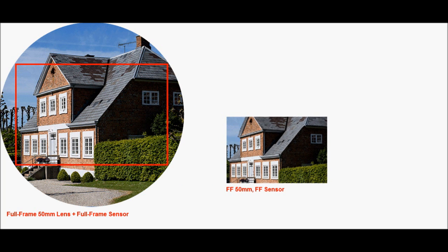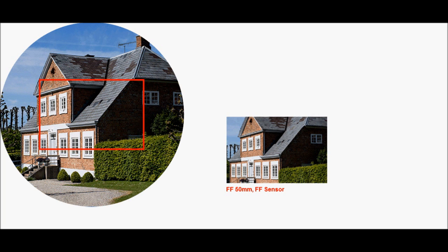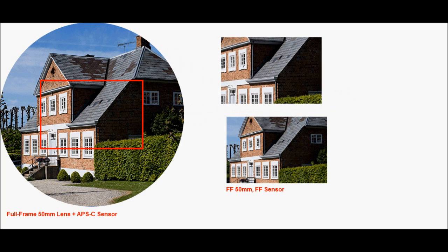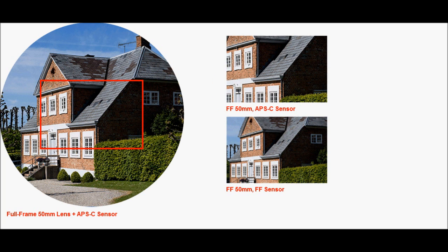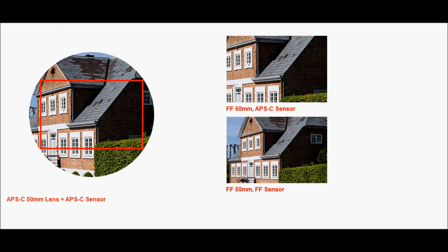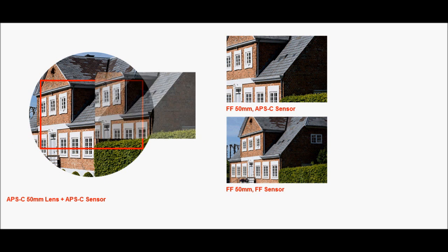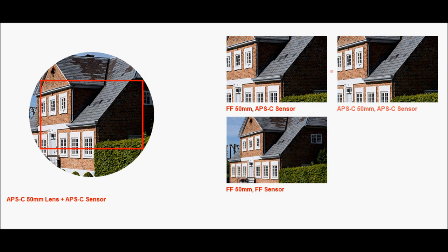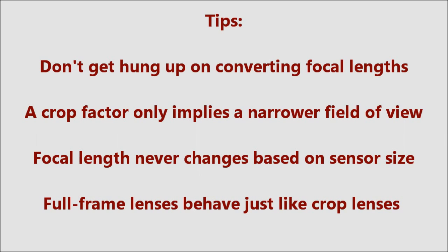So what's the bottom line? The one and only implication of the crop factor is the reduced field of view. It does not magnify the image or give you more zoom, and it doesn't modify the behavior of full frame lenses. But it's a very confusing subject, because for a full frame camera to have the same field of view as an APS-C camera, it would need a lens with a focal length that's 1.5 times longer, such as 75mm on the full frame if we were using a 50mm lens on APS-C.